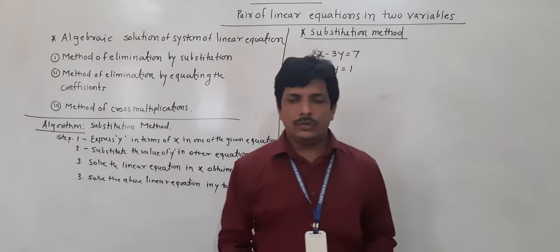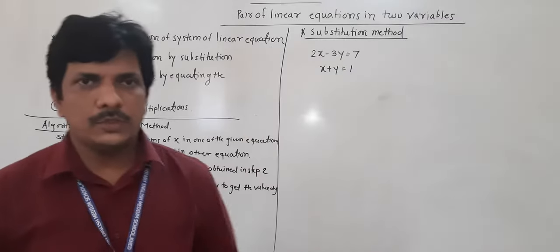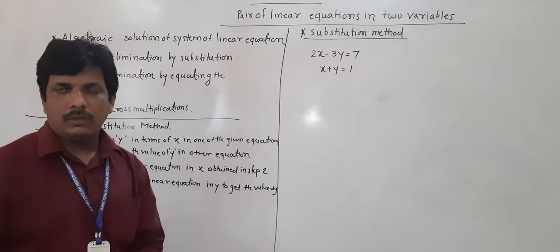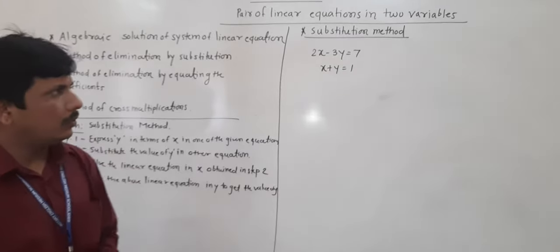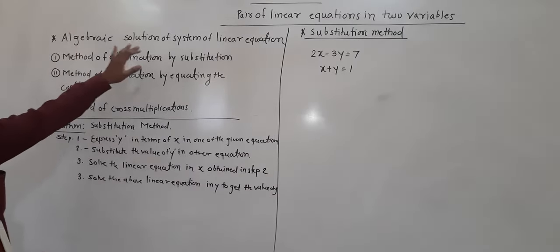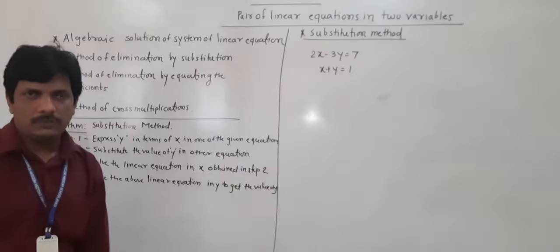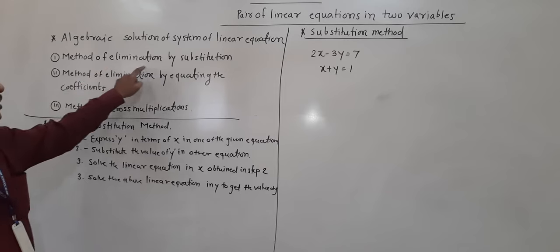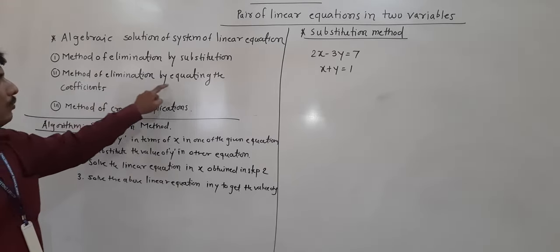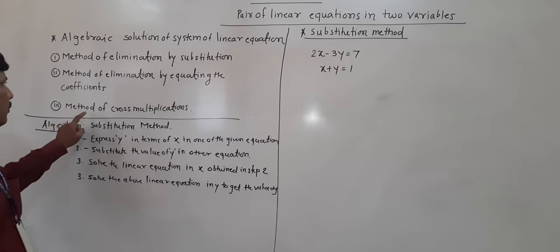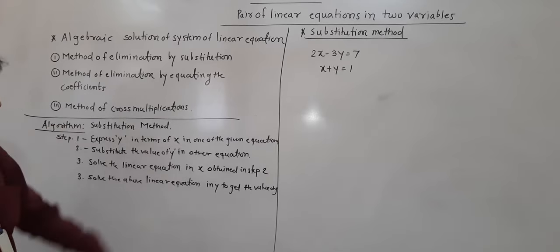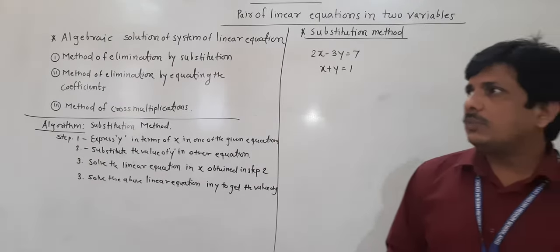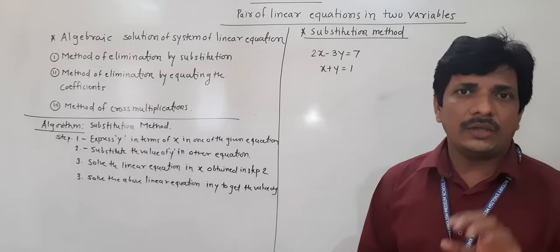Hello everyone. Today we are going to see our next point, that is the substitution method. Already you have seen algebraic methods and the graphical method. Here what is given is algebraic solutions of a system of linear equations. There are three methods: method of elimination by substitution, method of elimination by equating coefficients, and method of cross multiplication. The graphical method sometimes does not give us an accurate answer.